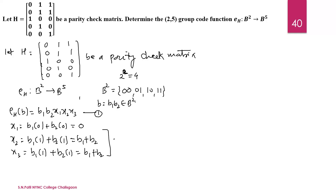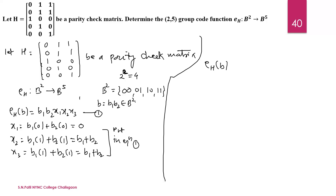Now put all these values into equation 1. So the encoding function becomes: E_H(b) = (b1, b2, 0, b1+b2, b1+b2). The value of x1 is 0, the value of x2 is b1 plus b2, and the value of x3 is b1 plus b2.